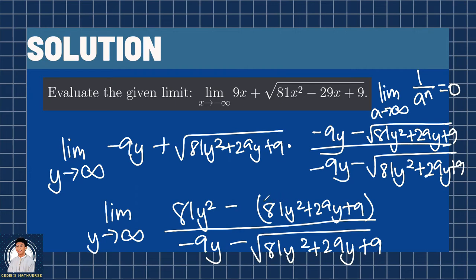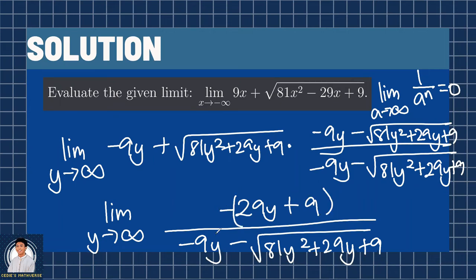Then, using distributive property, we will distribute the minus sign to each of the terms. So we have negative 81y squared minus 29y minus 9. The 81y squared is canceled, leaving us negative 29y minus 9. Canceling the negative sign for the numerator and the denominator, we have 29y plus 9 all over 9y plus the square root of quantity 81y squared plus 29y plus 9.